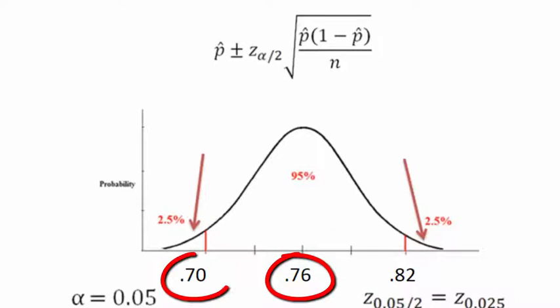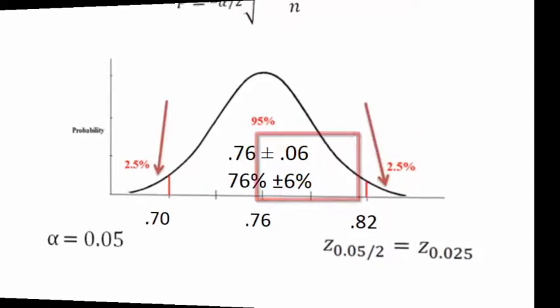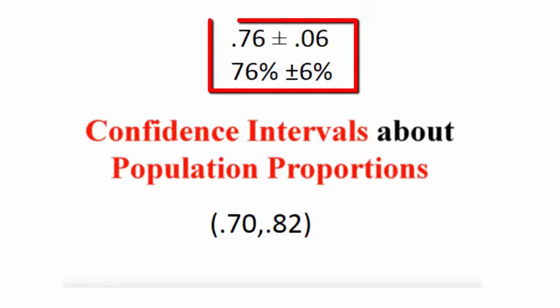Writing this same interval using margin of error notation, we have 0.76 plus or minus 0.06, or we could write it as 76 plus or minus 6 percent. So our answer as an interval would be 0.70 to 0.82 in parentheses, or using margin of error notation, 0.76 plus or minus 0.06 written as a decimal, or 76 plus or minus 6 percent written as a percent.